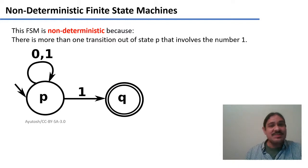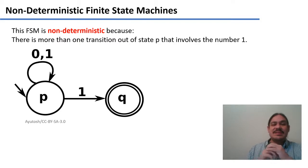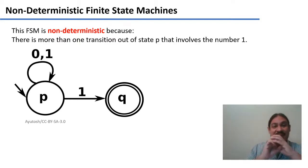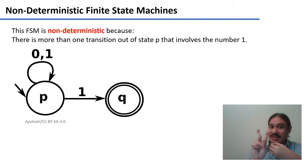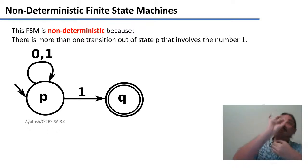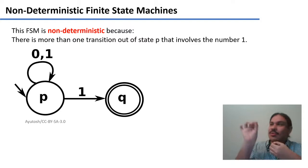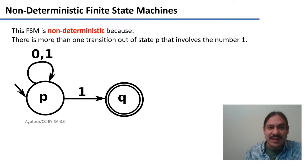This example is of a finite state machine that is non-deterministic because there's more than one transition out of state p that has the number one. If you're standing at state p and you get the input one, two things can happen — you can go from p to q, or you can cycle back into p. So getting the input one does not completely determine what's going to happen next.